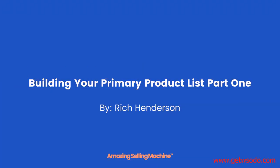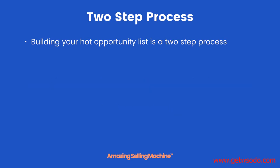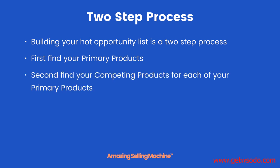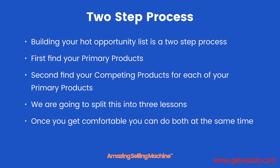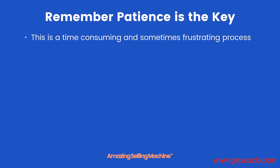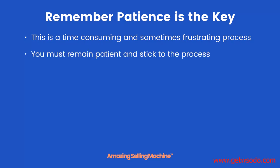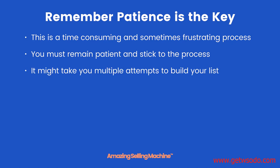Building your primary product list, part one. In this lesson you're going to learn how we begin our search for our primary products and how to set up Jungle Scout correctly to speed up the process. Building your hot opportunity list is a two-step process: first find your primary products, then find your competing products. This is a time-consuming and sometimes frustrating process — you must remain patient and stick to the process. It might take multiple attempts to build your hot opportunity list, so do not get disheartened.